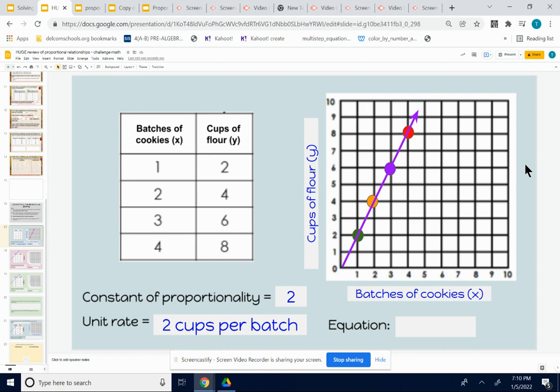But also what's really important for this to be proportional is that it travels through zero, zero. It's not only a straight line when it's proportional. It also is passing through 0, 0. Don't get to that again later.